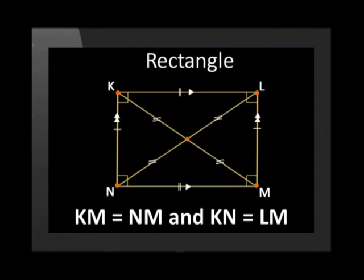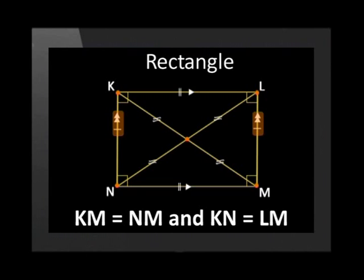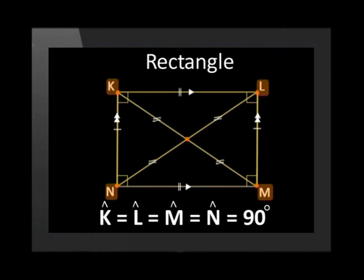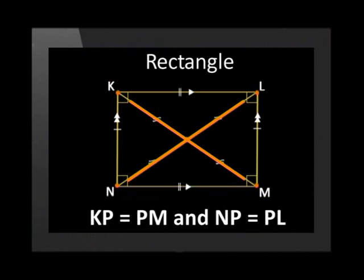The properties of a rectangle. A rectangle is a parallelogram with a 90 degree angle. The opposite sides are equal and parallel. All the angles are right angles, which mean they are 90 degree angles. The diagonals bisect each other and are equal in length.